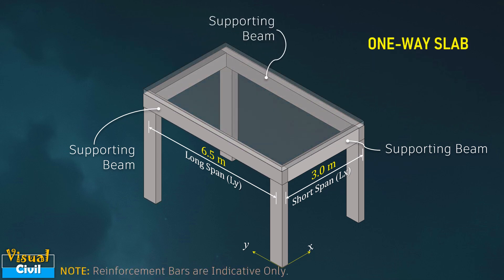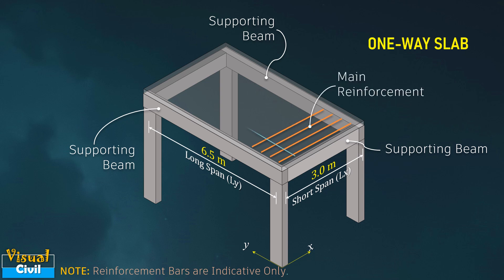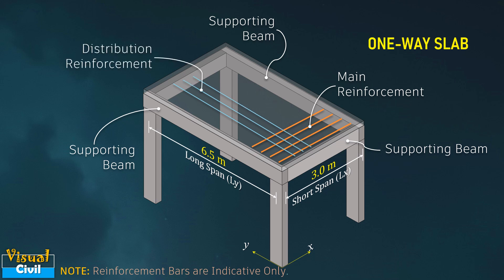As the major bending is along the short span, the main reinforcement will be provided along that direction, while distribution reinforcement will be provided perpendicular to the main reinforcement.